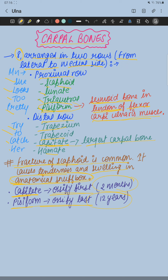The capitate is the bone which ossifies first among all the carpal bones, at the age of one to two years. Again, try to revise: this is the proximal row and this is the distal row.